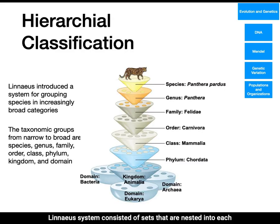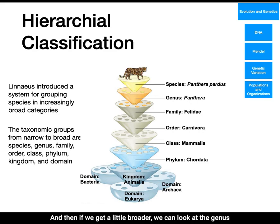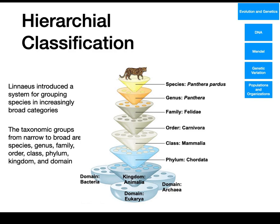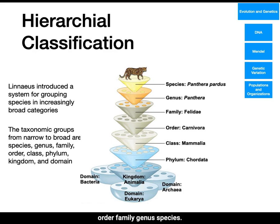Linnaeus' system consisted of sets nested within a hierarchy. Looking at the varying levels of organization for the leopard, you can see its species name, and then if we get broader: genus, family, order, class, phylum, kingdom, and then domain. So if we go from the large scale down to the very specific, we would go: domain, kingdom, phylum, class, order, family, genus, species.